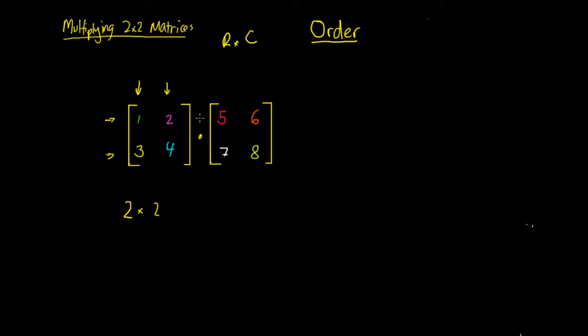Then the one here on the right, it's the same — it's got 2 rows and 2 columns. So we say that this is also a 2 by 2 matrix.